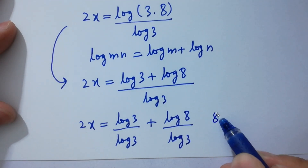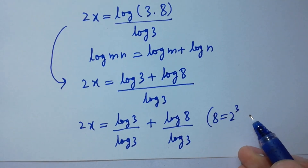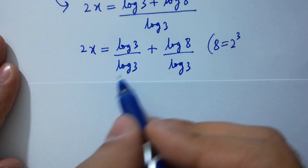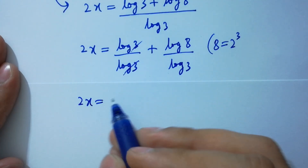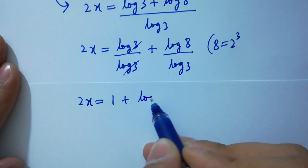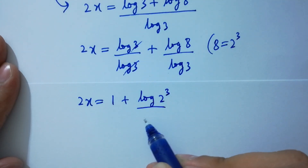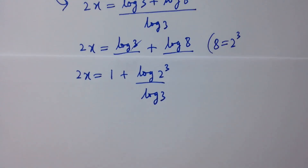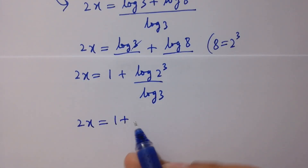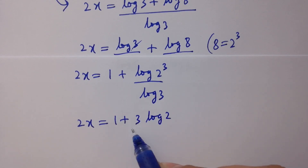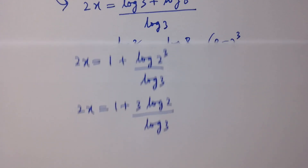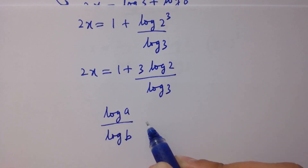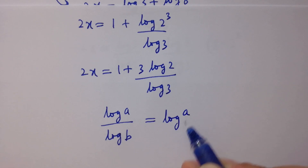Since 8 equals 2 cubed (2 times 2 is 4, 4 times 2 is 8), log 3 over log 3 cancels to 1. So 2x equals 1 plus log 2 cubed over log 3. Applying the power rule, 2x equals 1 plus 3 log 2 over log 3, which equals 1 plus 3 log 2 to the base 3.